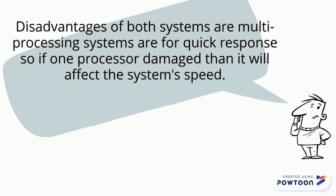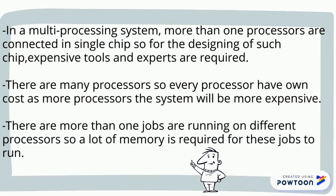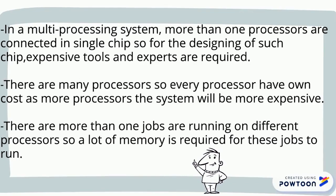Disadvantages of multi-processing systems: if one processor is damaged, it will affect the overall system speed. More than one processor is connected in a single chip, so designing such a chip requires expensive tools and experts. Every process has its own cost, making the system more expensive. Also, more than one job running on different processors requires a lot of memory.